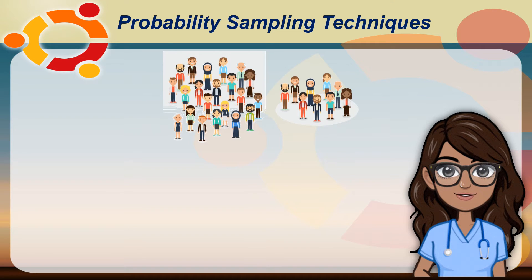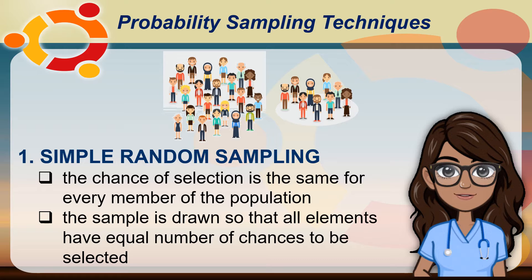According to Prieto, Naval, and Carey in 2017 and Faltado et al. in 2017, here are the types of probability sampling techniques used in quantitative research. Number one is simple random sampling. This is the basic probability sampling design in which the chance of selection is the same for every member of the population. To conduct this sampling technique, the researcher should first ensure they have the complete list of all the elements — the sampling frame — of the target population. From the list, the sample is drawn so that all elements have an equal number of chances to be selected.